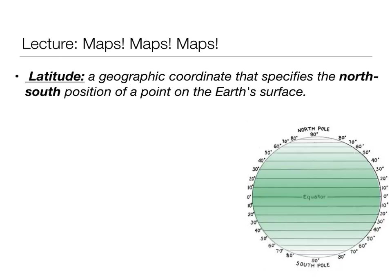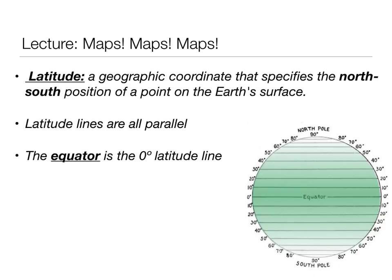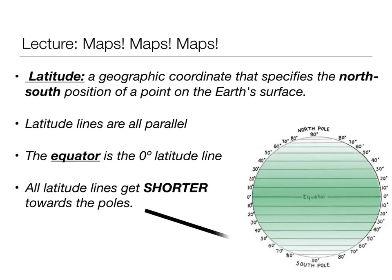Latitude lines are a geographic coordinate that specifies the north-south position on the Earth's surface. Since they tell you where you are north to south, the lines themselves are all parallel and they all run east to west. The equator is the zero-degree latitude line — everything north of the equator is in the northern latitudes and everything south is in the southern latitudes. All the latitude lines get shorter and shorter as we move towards the poles.